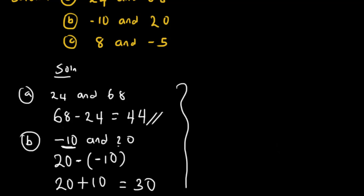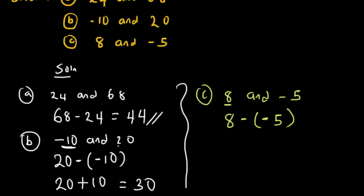For example (c), find the positive difference between eight and minus five. The bigger number comes first, so we have eight minus (minus five). Minus times minus is plus, so this becomes eight plus five, which equals thirteen.